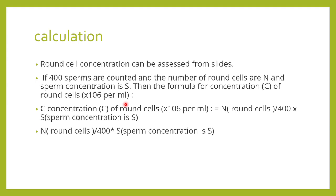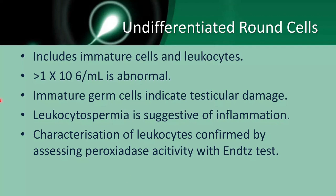In case it is very difficult to identify, take the help of special stains. If that is not available, correlate clinically. If that is also not available, at least mention them in the category of round cells and state how many cells are present per mL. If the round cell concentration is more than 1 × 10⁶ per mL, it becomes significant and abnormal.